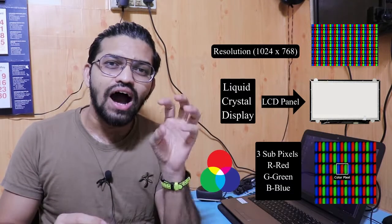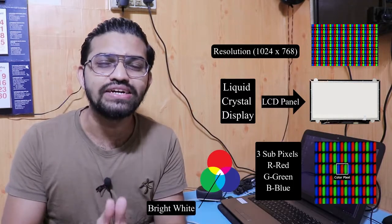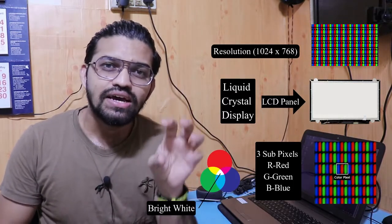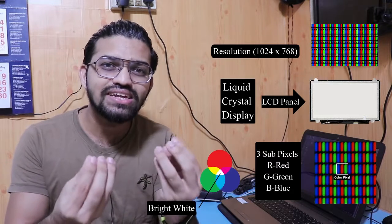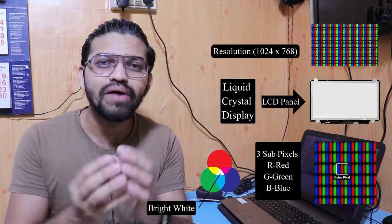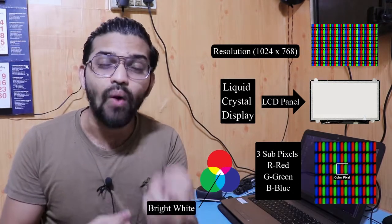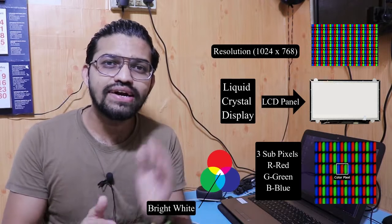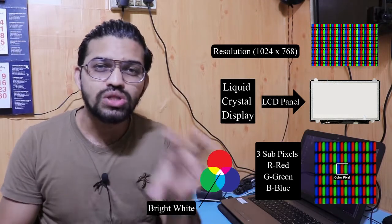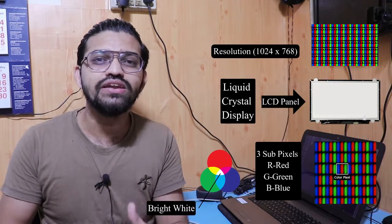The RGB sub-pixels combine to produce different colors of light. For example, red, green, and blue lights combined together can form bright white light. Each pixel is made up of red, green, and blue sub-pixels arranged in an array.